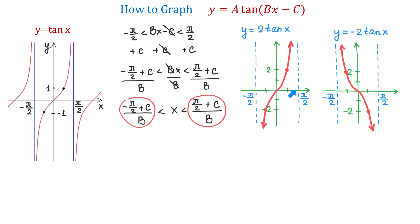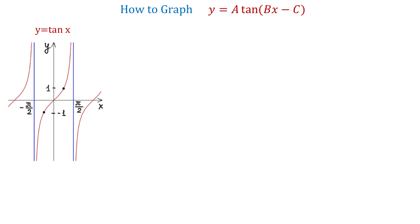And if over this interval this function is increasing, then over the same interval this function is decreasing. Now let's see an example that will have the form y equals a tangent of bx minus c, which means we will start by finding the new asymptotes. We will graph the function y equals 4 tangent of 2x minus pi.